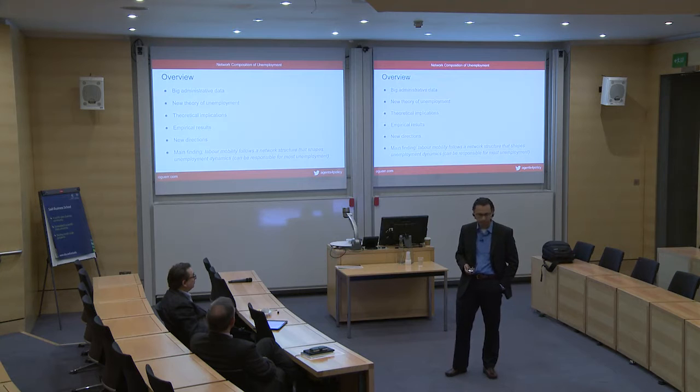For those who want the punchline ahead of time: the main finding is that labor mobility follows a network structure in the economy. This network structure shapes the amount of unemployment we observe, and under certain circumstances the network can contribute to most of the level of unemployment we see in the data.